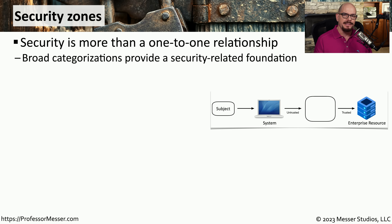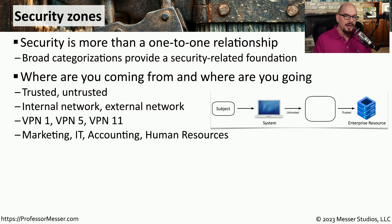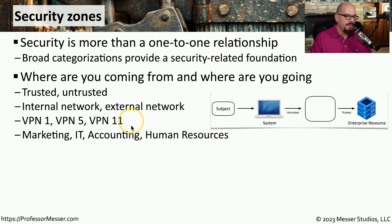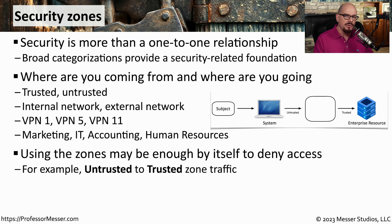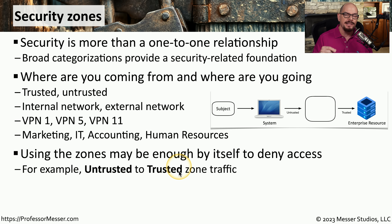Another good way to qualify the identity of a person is to understand where they're connecting from. We broadly categorize these as security zones, which expands from a simple one-to-one relationship to examining the overall path of the conversation — where we're connecting from and where we're trying to connect to. This may be an untrusted network connecting to a trusted network, or internal versus external. You can also create separate VPN connections or separate groups for different departments, then set rules on what zone has access to other zones, such as automatically denying access from an untrusted zone to a trusted zone.